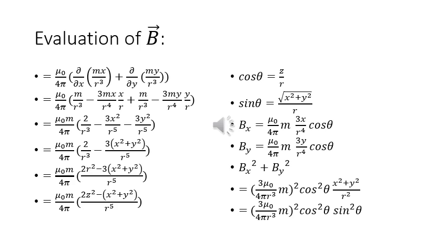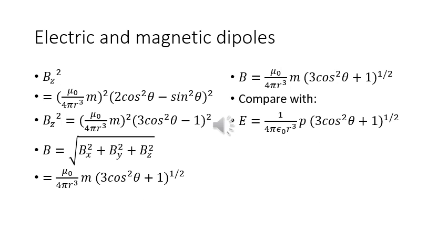Since cos θ = z/r and sin θ = √(x² + y²)/r, Bx = μ₀m · 3x cos θ / (4π r⁴), and By = μ₀m · 3y cos θ / (4π r⁴). Then Bx² + By² = 9μ₀²m² cos²θ sin²θ / (4π r³)². Bz² = [μ₀m/4πr³]² · (2cos²θ − sin²θ)² = [μ₀m/4πr³]² · (3cos²θ − 1)².